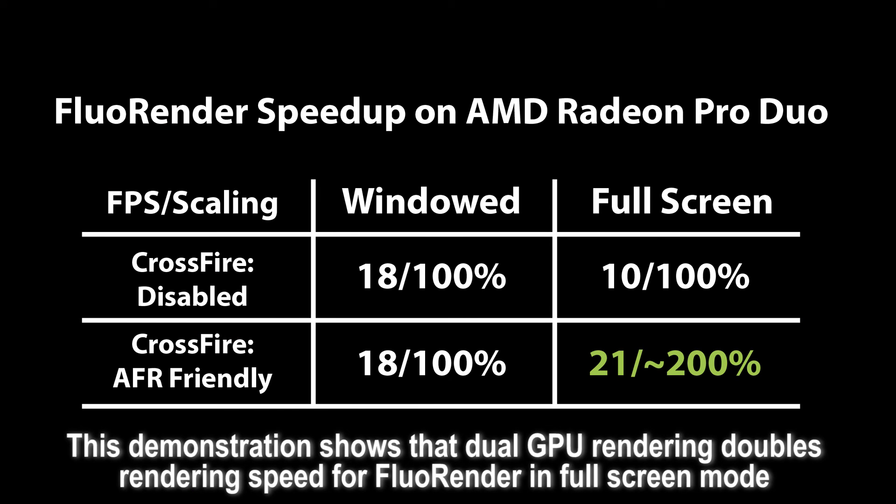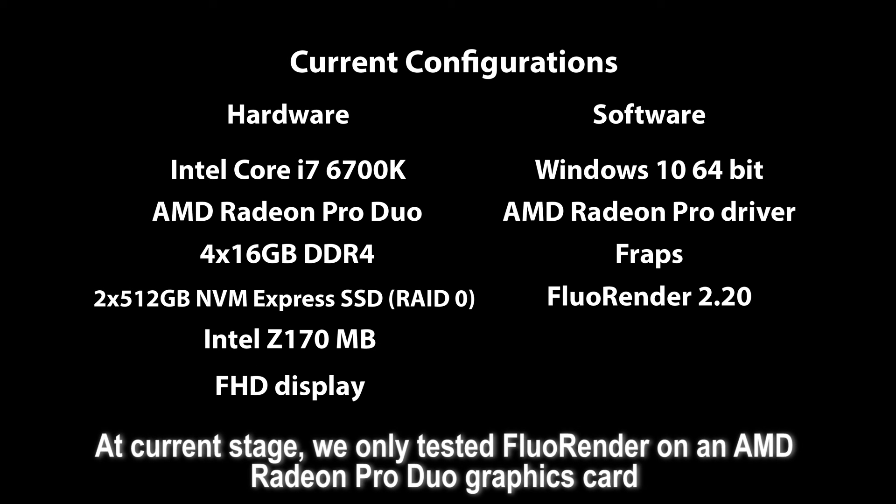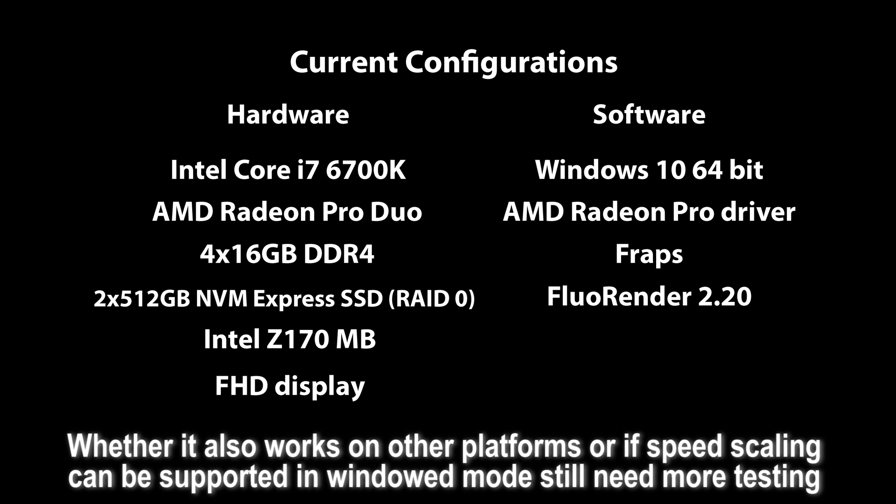This demonstration shows that dual GPU rendering doubles rendering speed for Fluorender in full screen mode. At about 200%, the speed scaling is also perfect. At current stage, we only tested Fluorender on an AMD Radeon Pro graphics card. Whether it also works on other platforms, or if speed scaling can be supported in windowed mode, still needs more testing.